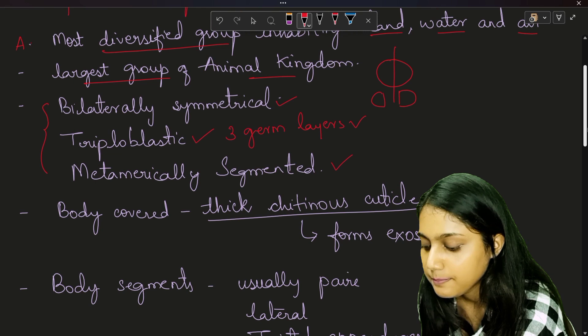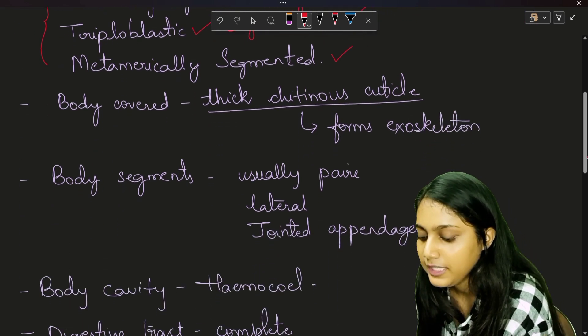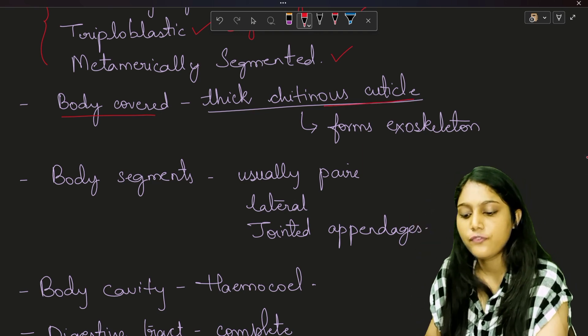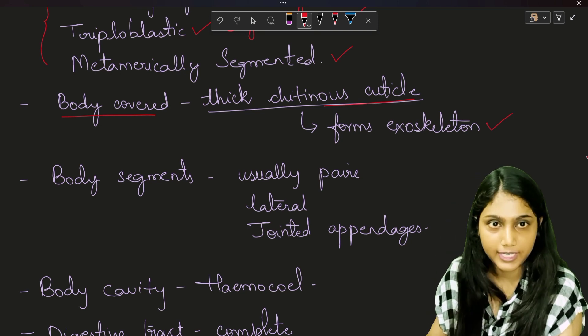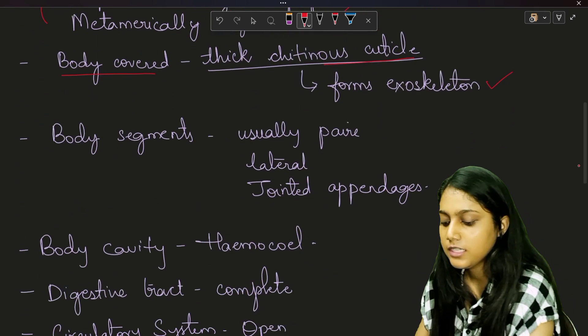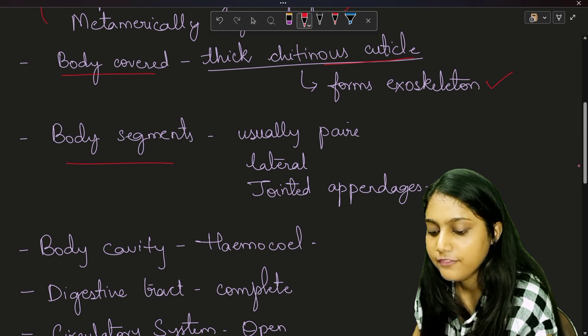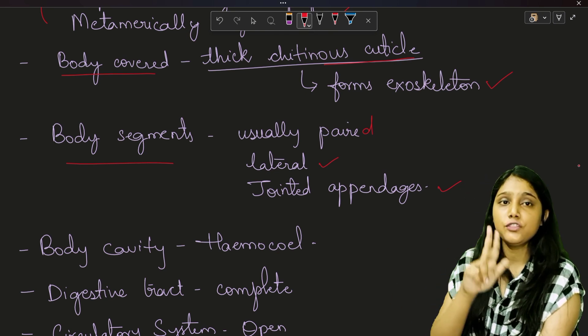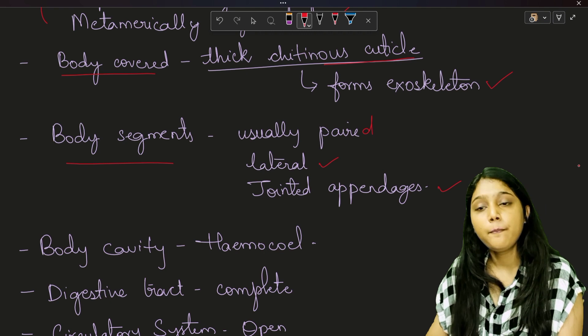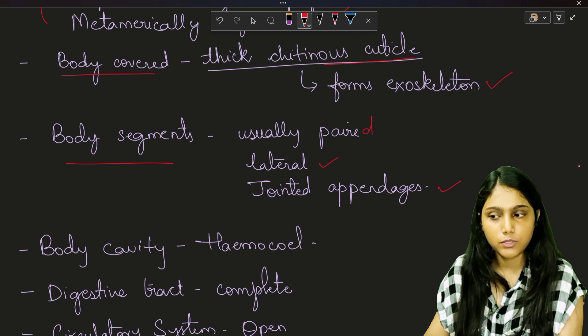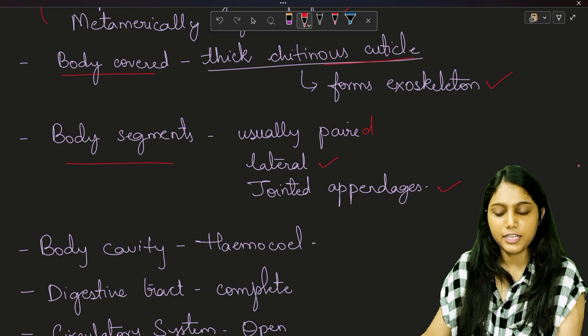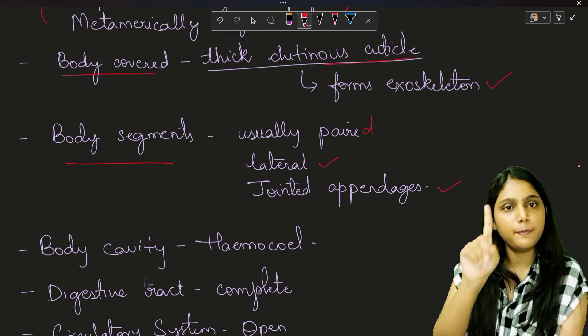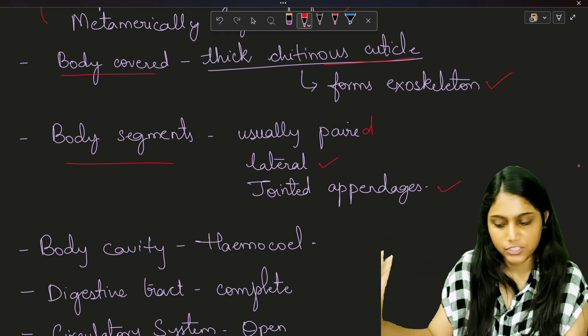Now let's talk about their body covering. So the body is covered with a thick chitinous cuticle which forms the exoskeleton of these organisms. Next we will talk about the body segments. Now the body segments will usually have paired lateral and jointed appendages. So their segments usually have paired lateral and jointed appendages.